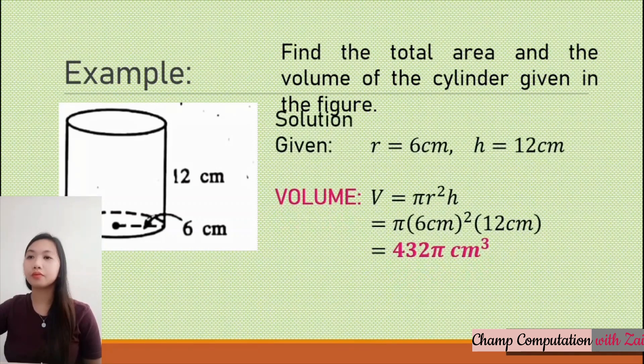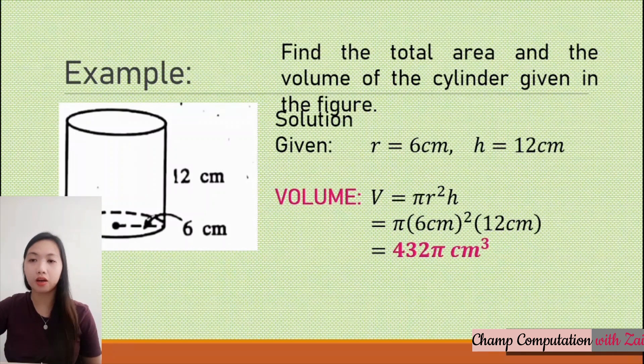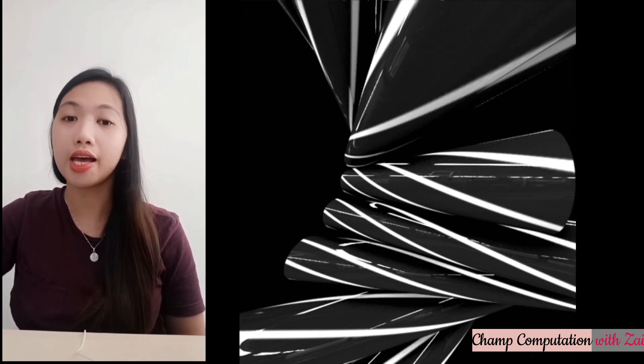For the volume, the volume is πr² multiplied by height. Again, substituting the values, we have π multiplied by 6 centimeters squared multiplied by 12 centimeters. We have a total of 432π cubic centimeters. So that's all for cylinders, the total area and the volume of the cylinder.